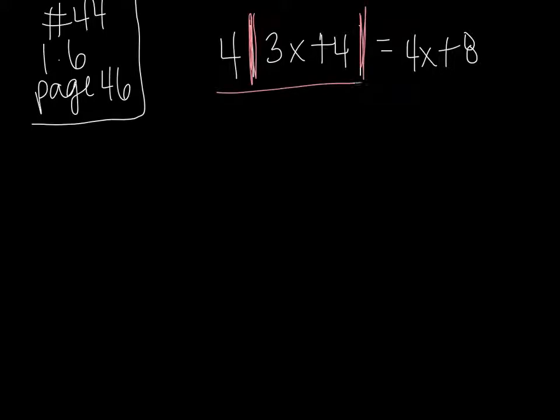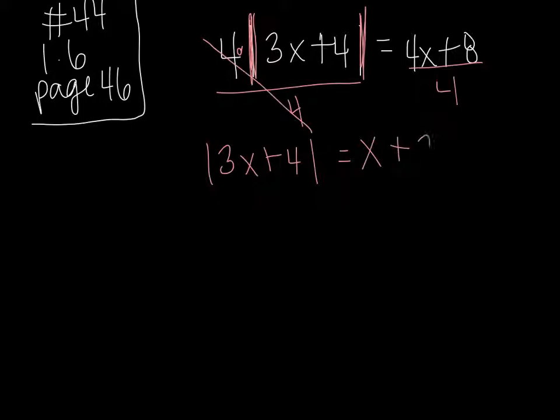So let's divide both sides by 4. Remember when we're dividing by 4, this is like saying 4 times this entire quantity. So those are gone. I still have absolute value of 3x plus 4 equals, and I have to make sure everything over here is divided by 4. So 4x divided by 4 is just x, and 8 divided by 4 is just 2.